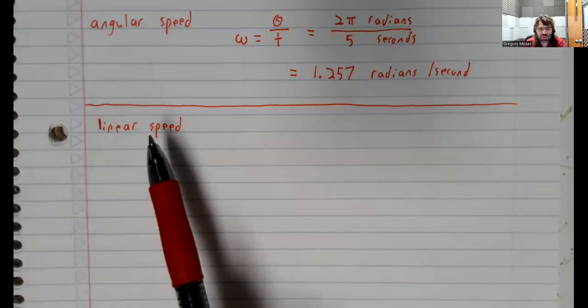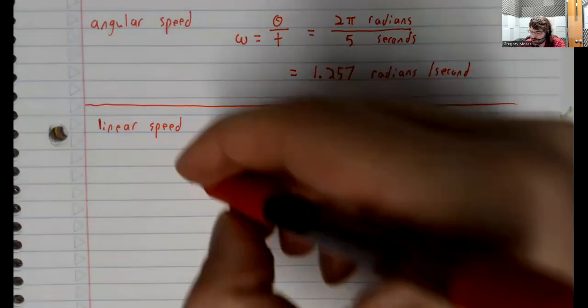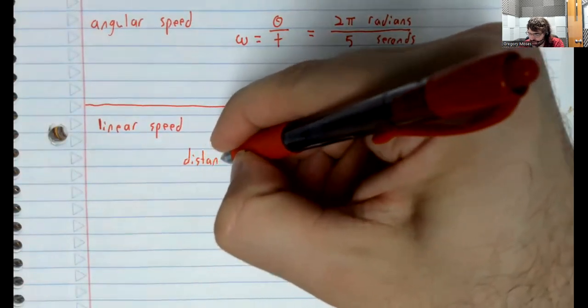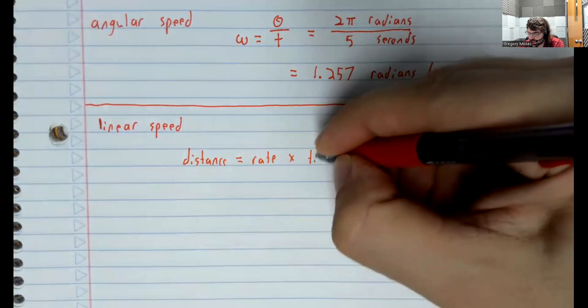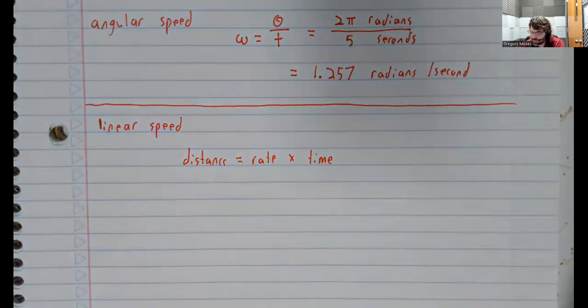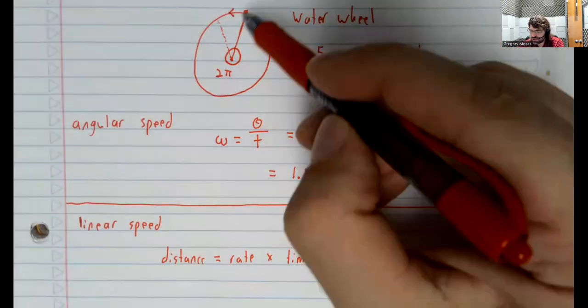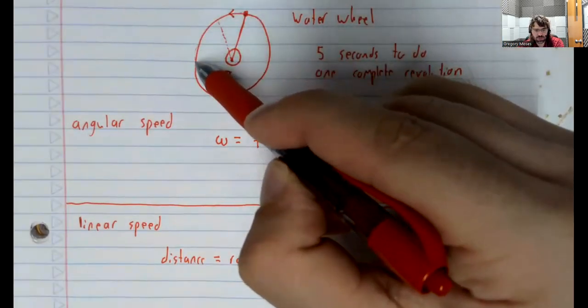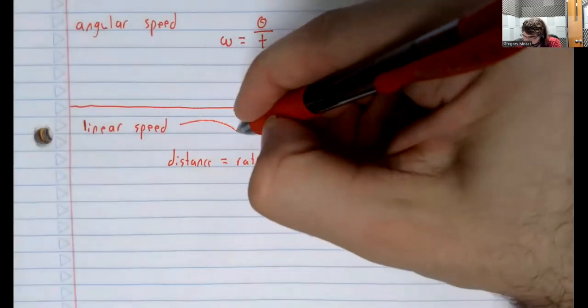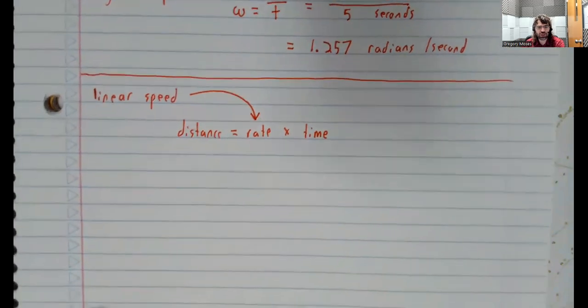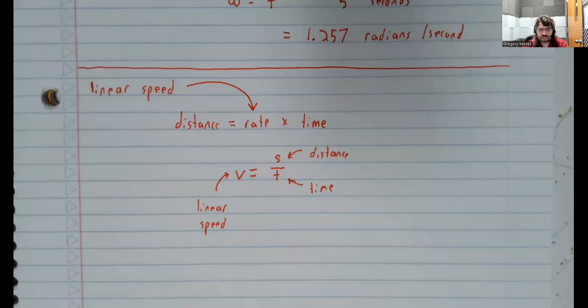The formula for the linear speed is hopefully familiar. At some point when you were kids, we probably all saw that distance equals rate times time. So, the distance is the distance that this point travels. Time is time. And rate is the linear speed.